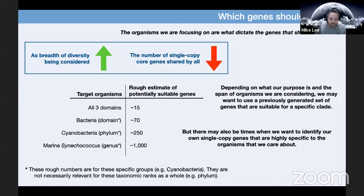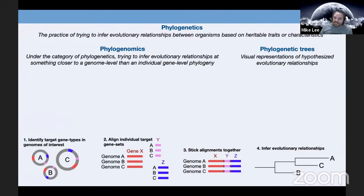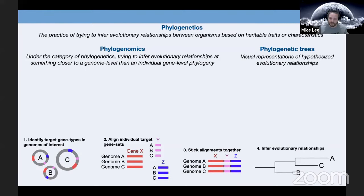There will also be times when we want to identify our own single copy genes that are highly specific to the organisms we care about and will provide maximum resolution for what we're looking at. This is part of what Maren is going to tie together — we would often do this with pangenomics. There's no special cutoff for when phylogenetics becomes phylogenomics; it's really just that phylogenomics conveys something closer to a genome level than an individual gene level phylogeny. Some people don't even use the term, and that's fine — these are all just phylogenetic trees in the end.